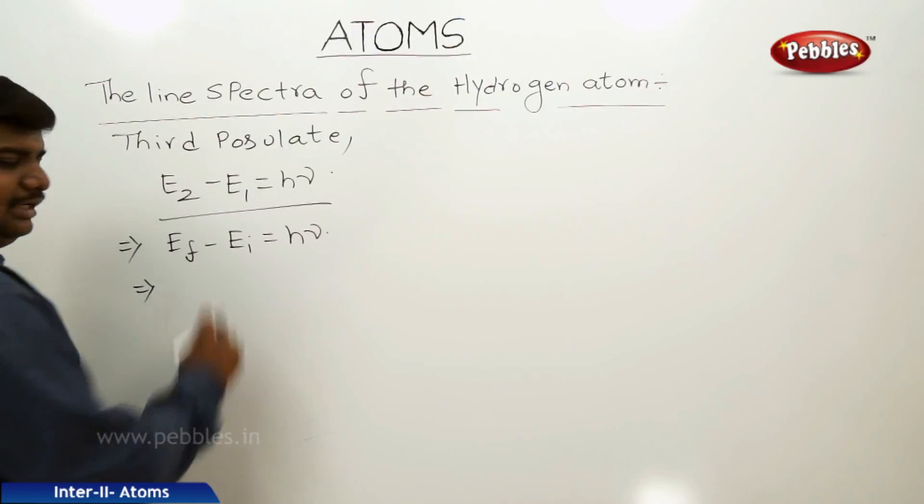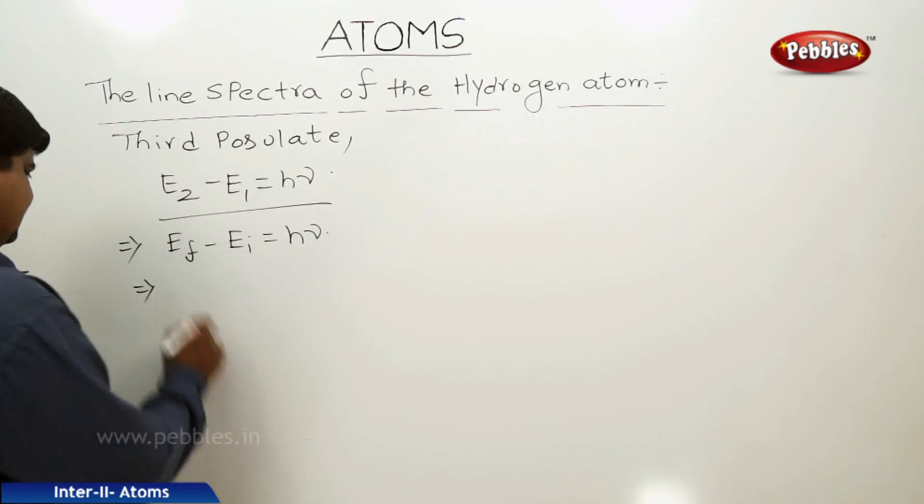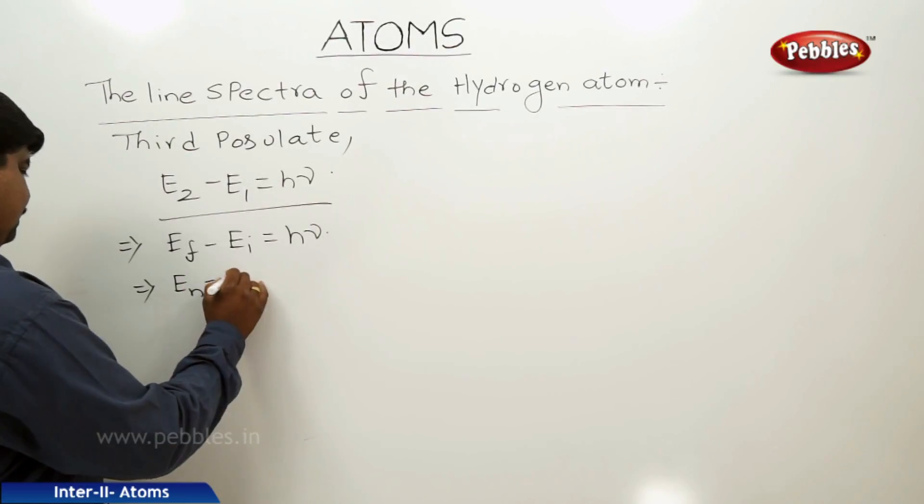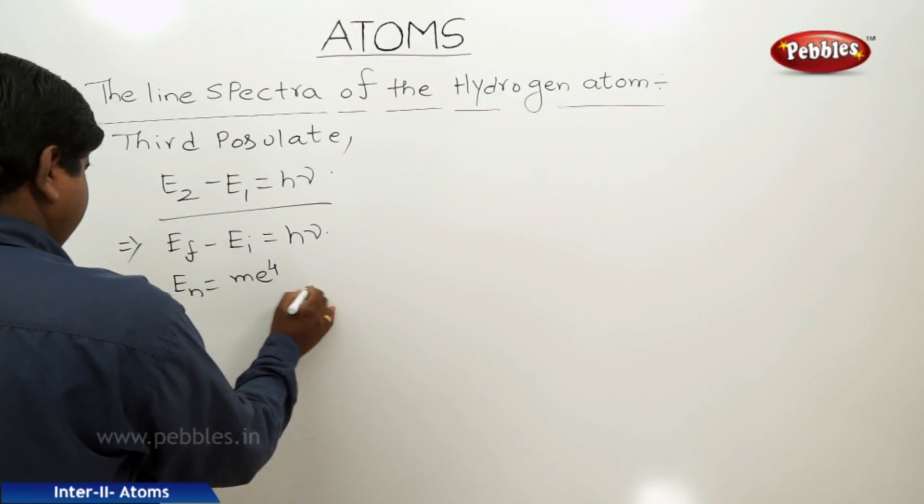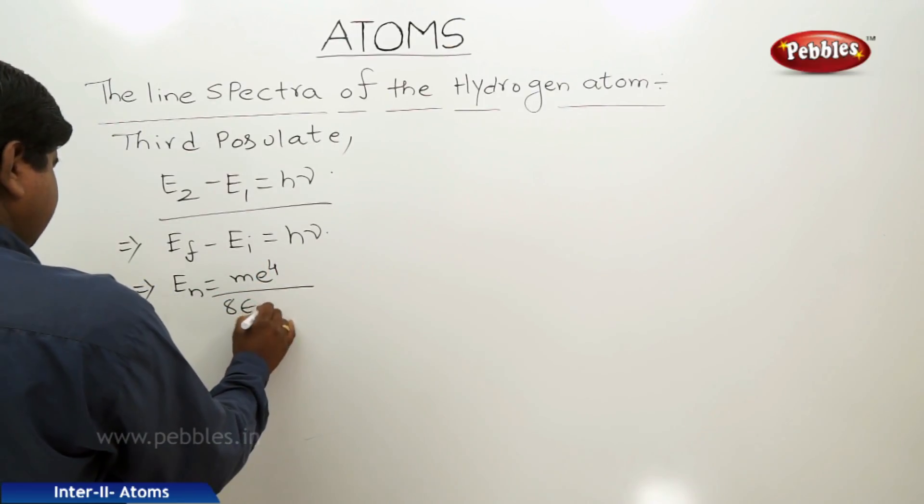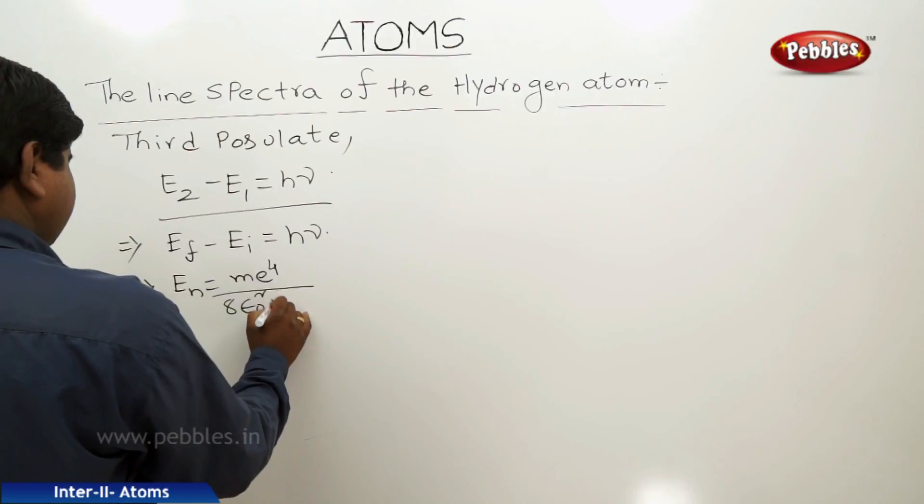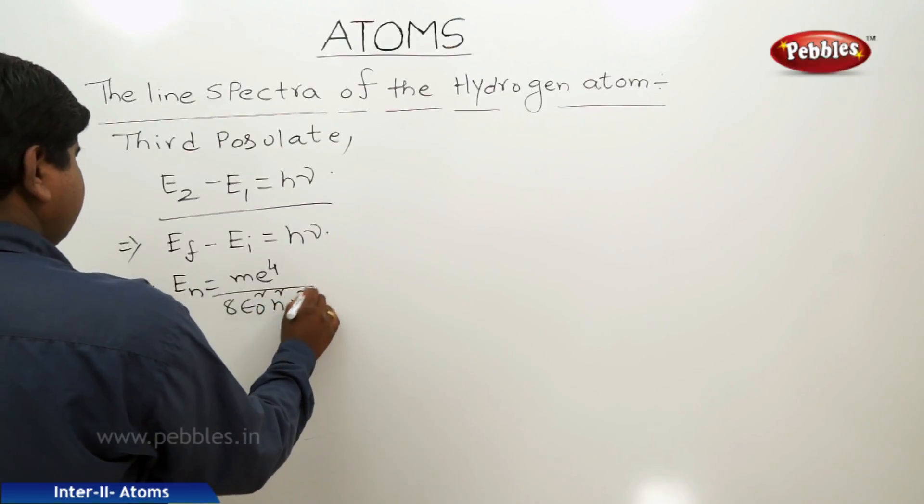The energy of the nth orbit, we can write as m e⁴ divided by 8 epsilon naught squared h squared n squared.